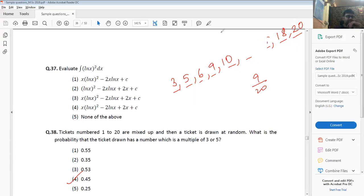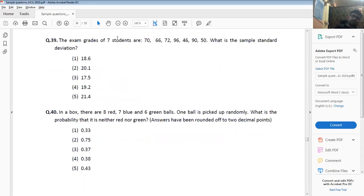0.45. Question 39 and 40: The exam grades of seven students, sample standard deviation. In a box, there are 8 red, 7 blue, and 6 green balls. One ball is picked up randomly. What is the probability that it is neither red nor green? It can only be blue. 7 by 21, which is 1 by 3.